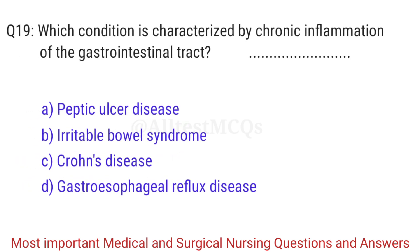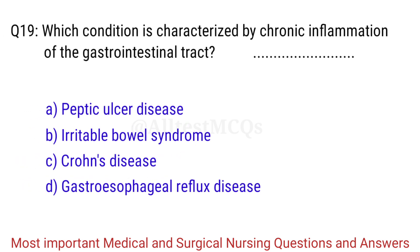Q19. Which condition is characterized by chronic inflammation of the gastrointestinal tract? The right answer is Option C: Crohn's disease.